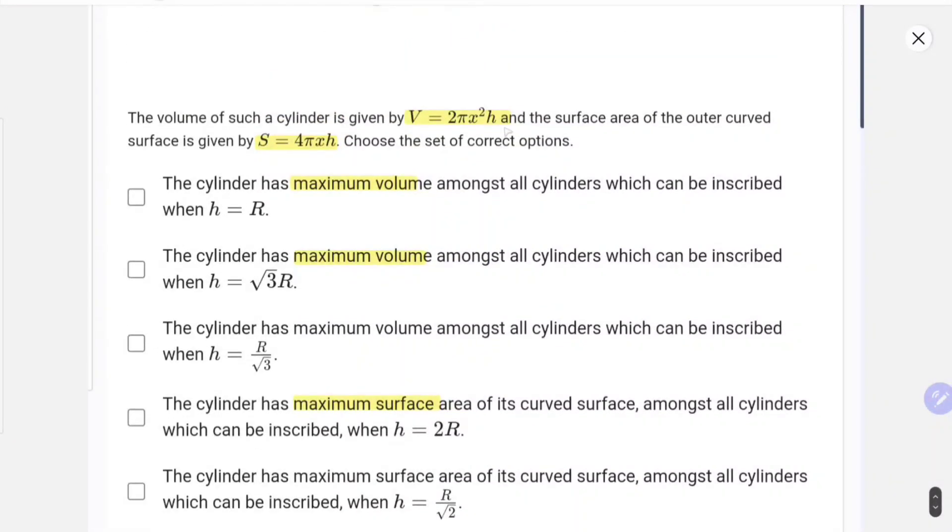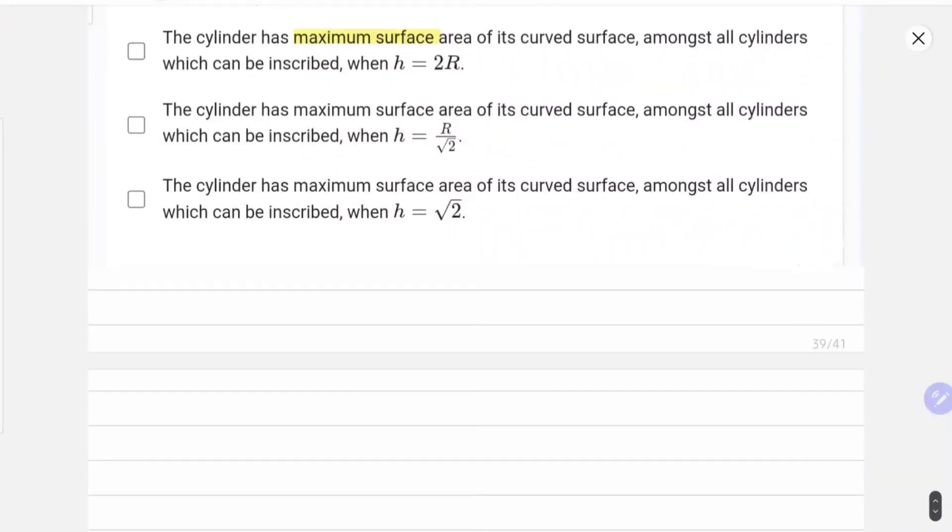The volume is given as 2πx²h. So volume was v equals 2πx²h. Now we have to find the value of h where v is maximum.